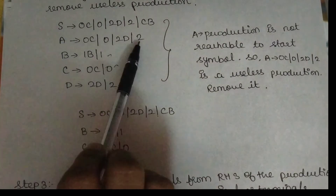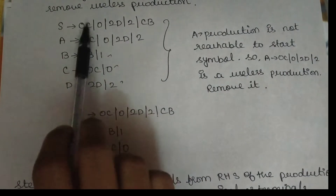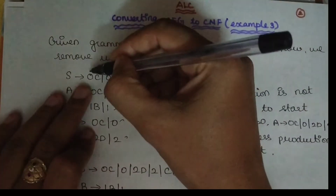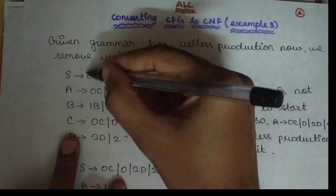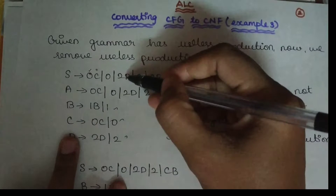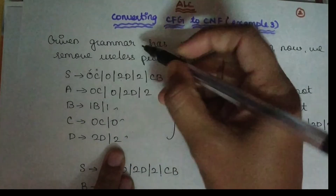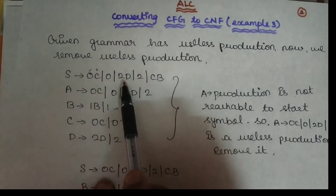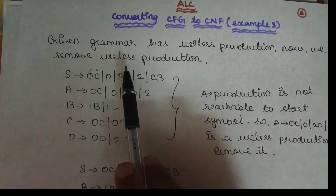All variables also have terminal symbols. If you want to substitute all of them to generate full terminal strings — for example, 0 is already terminal, C already includes terminals, D includes 2 — so all can generate full terminal symbols. Therefore, there are no non-generating symbols.